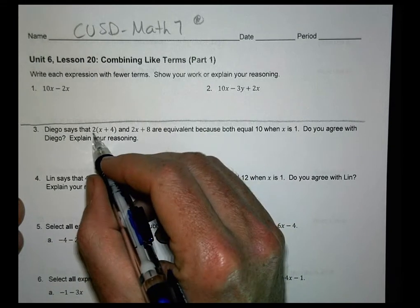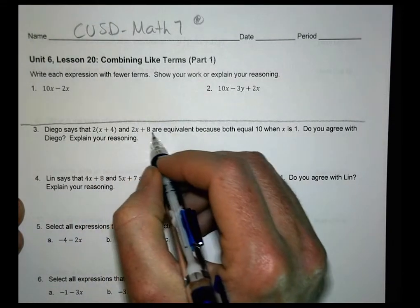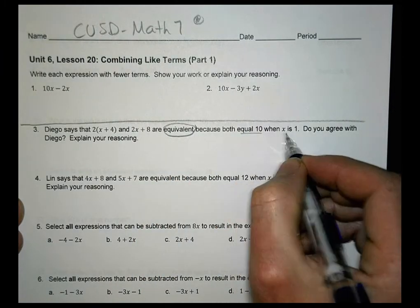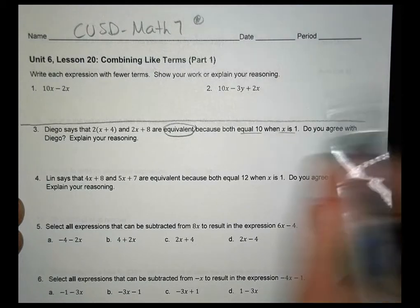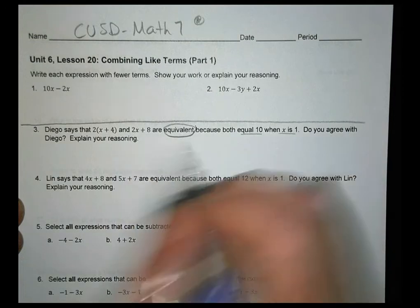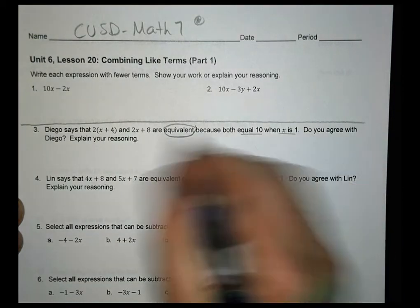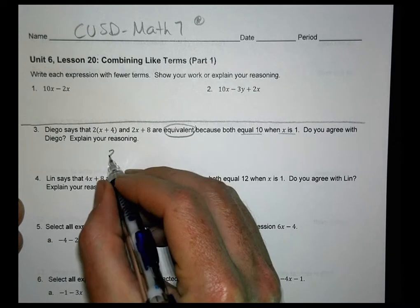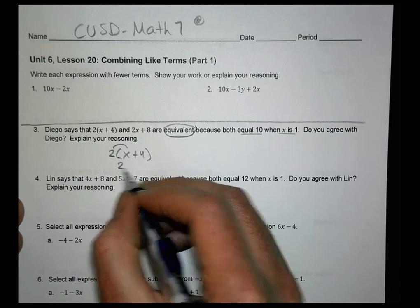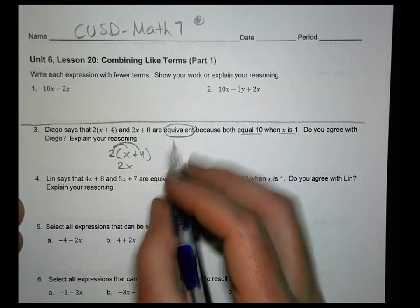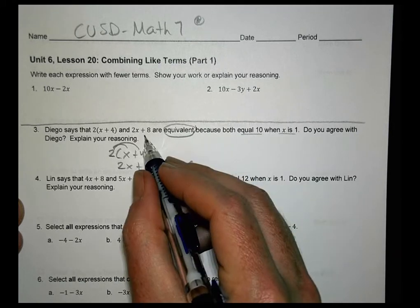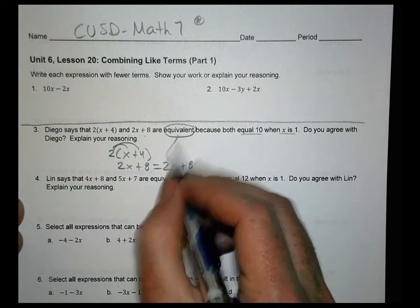Number 3, Diego says 2 times the quantity x plus 4 and 2x plus 8 are equivalent because both equal 10 when x is 1. Do you agree? Well, it's not so much if it's going to be equal to 10 when x equals 1. It's about if these two things are actually the same. That's what's more important than plugging a value in. So if I take 2 times the quantity x plus 4 and I expand it, I do 2 times x is 2x and 2 times 4 is 8. And that, of course, is going to equal 2x plus 8, which is this one here.